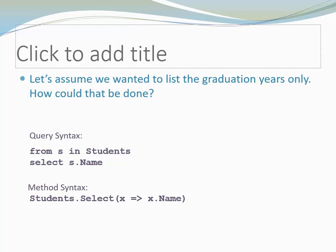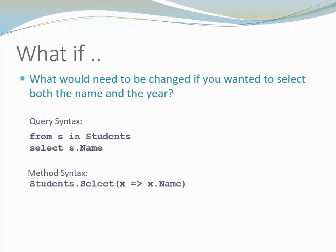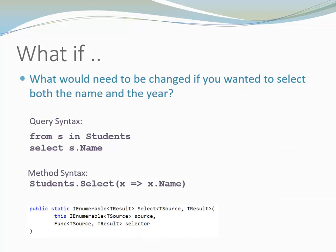Let's assume we wanted to list the graduation years only — we could just select the year instead of the name. But what would we need to change if we wanted to select both the name and the year? Let's have a look at the method declaration of the standard query operator SELECT. Notice the return type: it is IEnumerable TResult. This means that the method SELECT returns a sequence. We get to choose the type TResult, but it is one type only. If we want to select both the name and the year, we need to combine both into a single type.